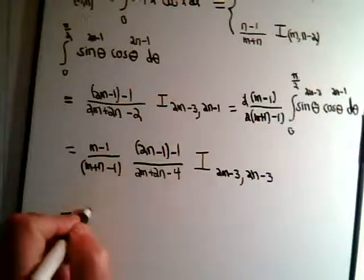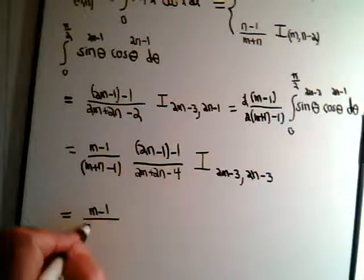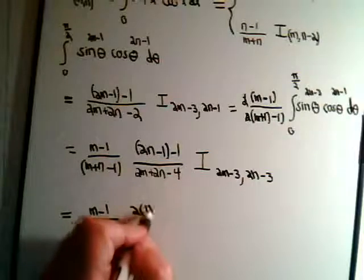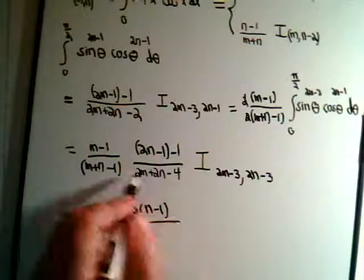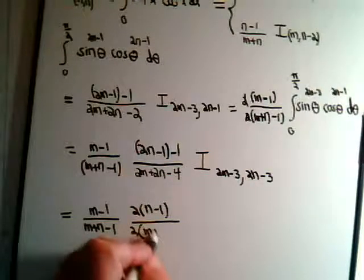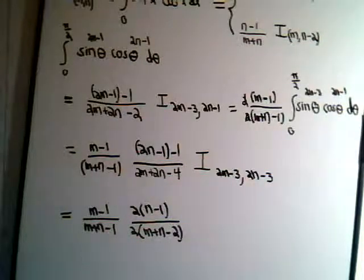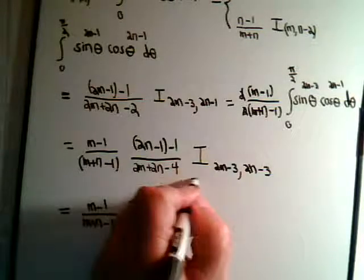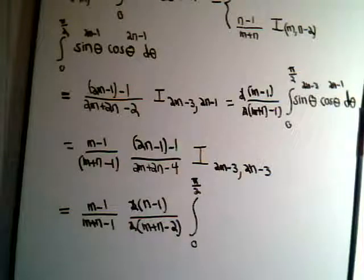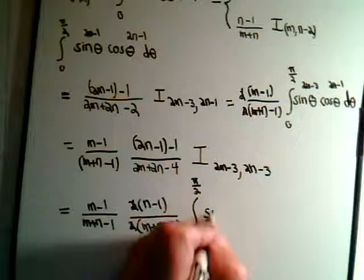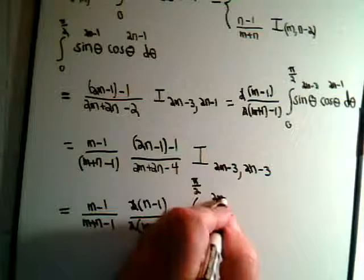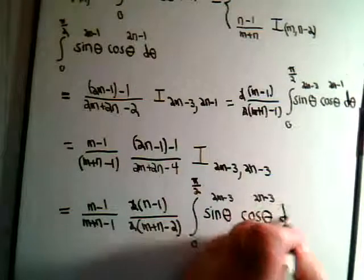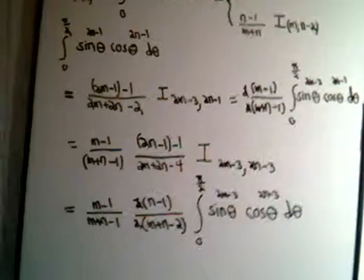So putting it together, we have (m minus 1) over (m plus n minus 1), times (n minus 1) over (m plus n minus 2), times the integral from 0 to pi over 2 of sine raised to (2m minus 3) times cosine raised to (2n minus 3) d theta.